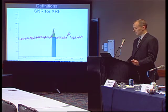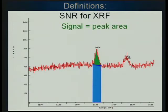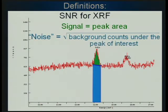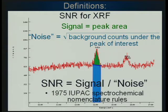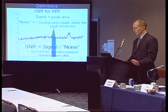The signal-to-noise ratio for XRF is just a little bit different. The signal is still the peak area (shown in green), and the noise is not true noise but rather the square root of the background counts under the peak of interest. SNR is signal divided by this noise. This has been around for a while — it comes from the 1975 IUPAC nomenclature rules — so it's an application of what's already been out there.